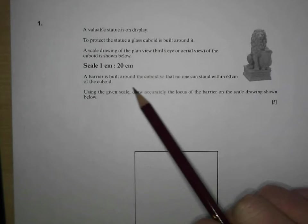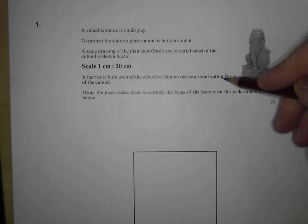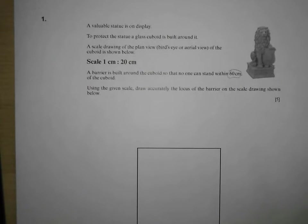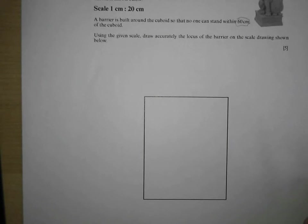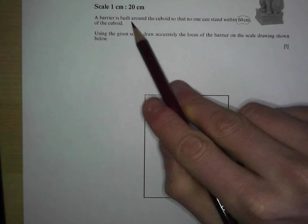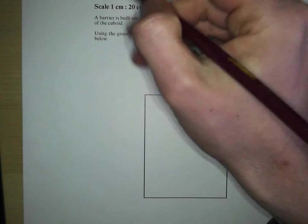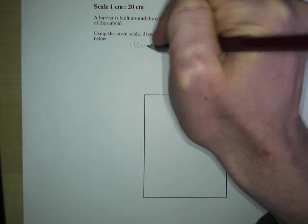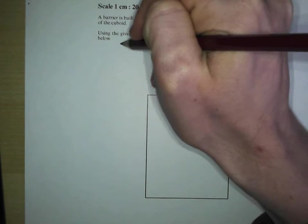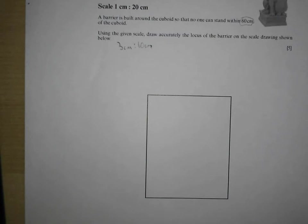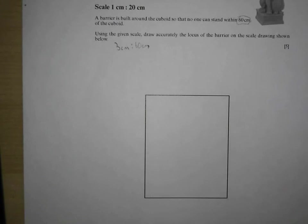A barrier is built around the cuboid so that no one can stand within 60 centimeters of the cuboid. Using the given scale, draw accurately the locus of the barrier. We can see here 60 centimeters equals three 20-centimeter units, so that's 3 cm on our scale drawing. Nobody can be within 3 cm of this particular cuboid. So how are we going to do this?